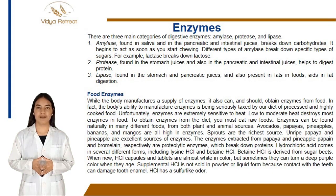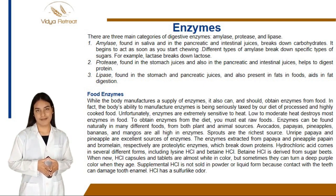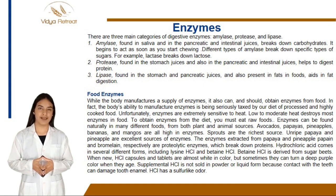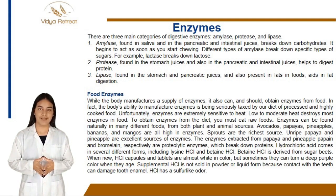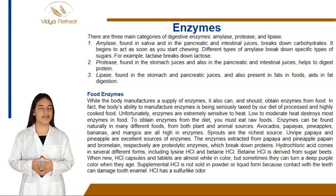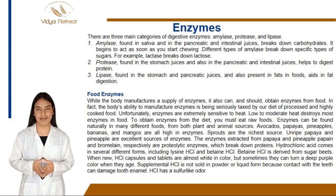There are three main categories of digestive enzymes: amylase, protease, and lipase. Amylase, found in saliva and in the pancreatic and intestinal juices, breaks down carbohydrates. It begins to act as soon as you start chewing. Different types of amylase break down specific types of sugars.